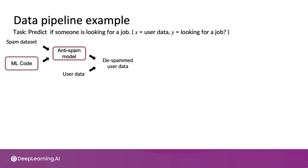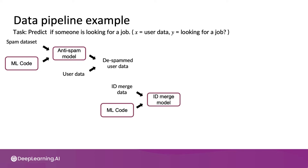We're following our usual convention that things with a purple rectangle around them represent pieces of code. Taking your de-spam user data, you might want to carry out user ID merge. To do that, you might start off with some ID merge data — labeled data telling you pairs of accounts that actually correspond to the same person. You have a machine learning algorithm implementation, train the model on that, and this gives you a learned ID merge model that tells you when to combine two accounts into a single user ID. You then take your ID merge model and apply it to the de-spam user data, giving you your cleaned-up user data.